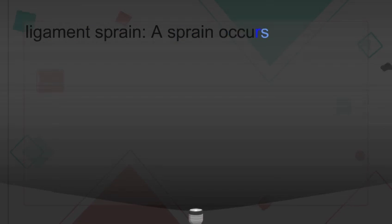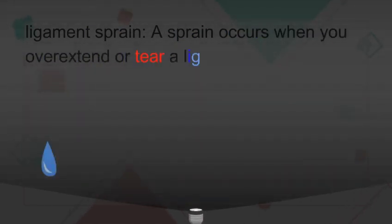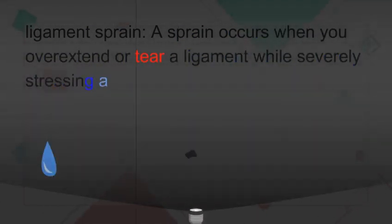4. Ligament Sprain. A sprain occurs when you overextend or tear a ligament while severely stressing a joint.